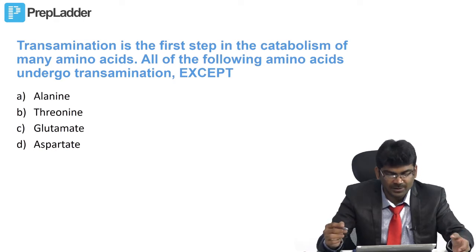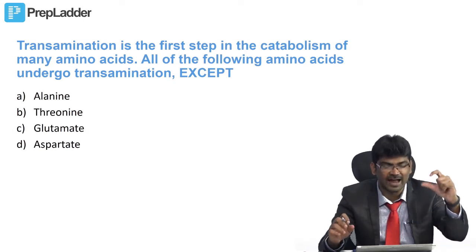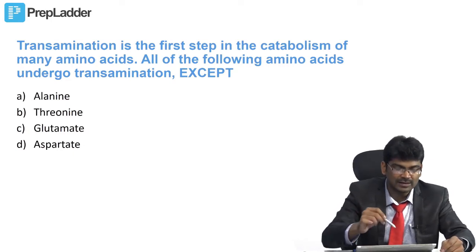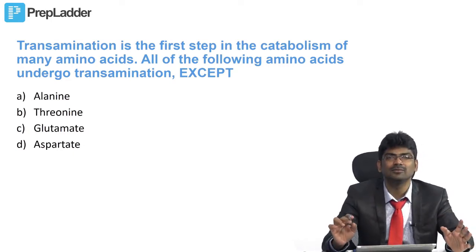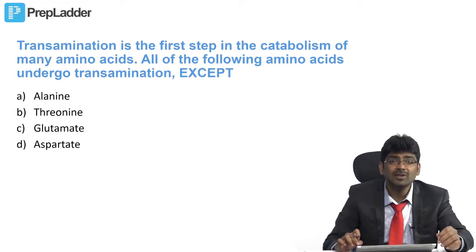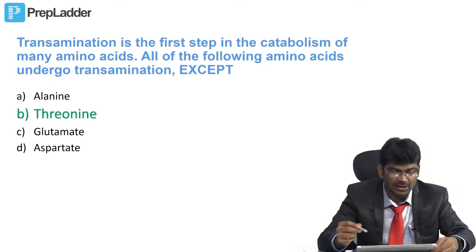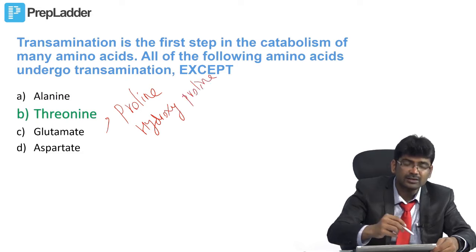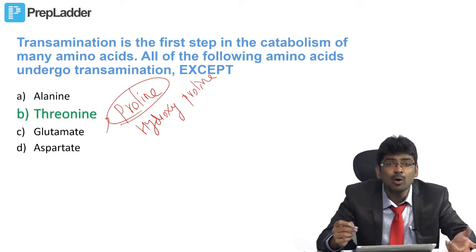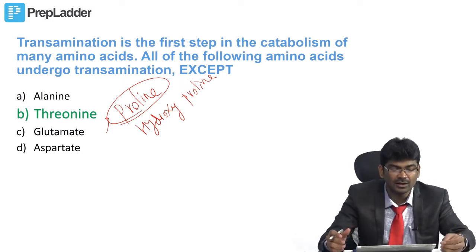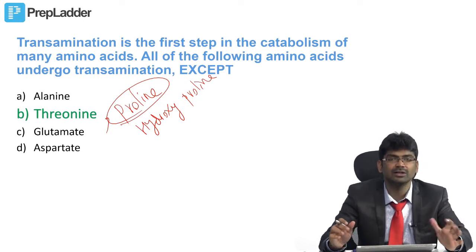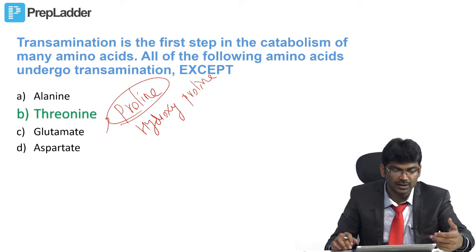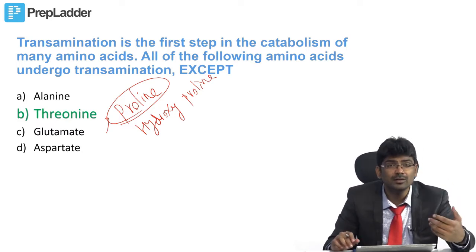Transamination is the first step in the catabolism of many amino acids. Name the amino acids which cannot undergo transamination. The answer is threonine, proline, and hydroxyproline. Proline is an imino acid, so obviously it cannot undergo transamination. Very important: amino acids that cannot undergo transamination are threonine, proline, and hydroxyproline.